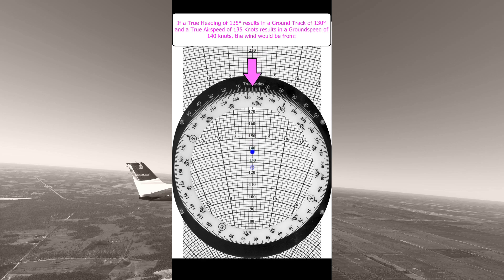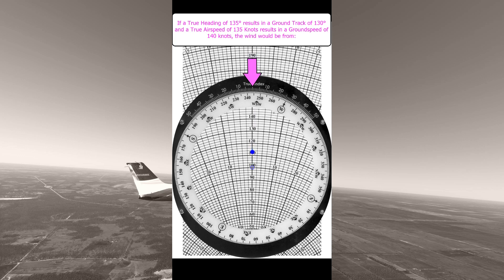If you slide the scale so that the grommet is now sitting on the 100 mark you can take the difference between where the wind dot is and where the grommet is minus 100 and that will give you the wind speed.